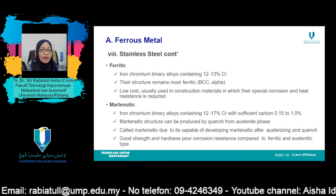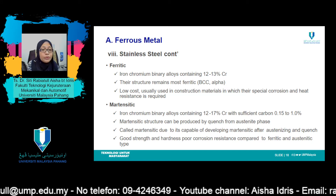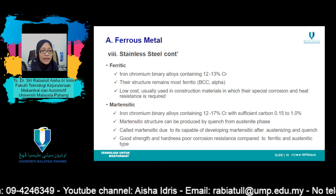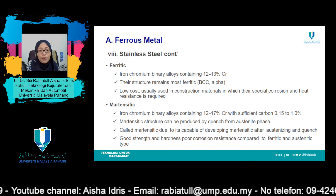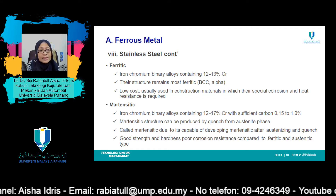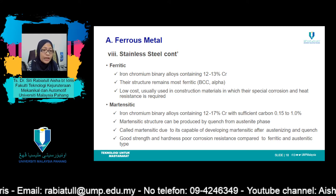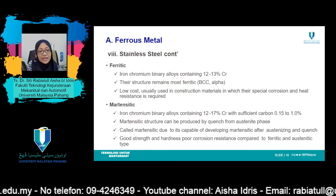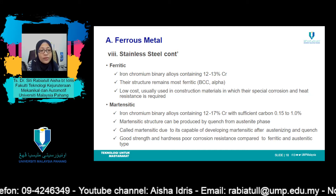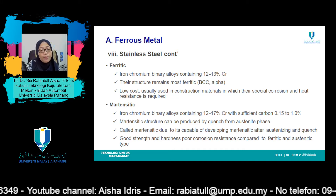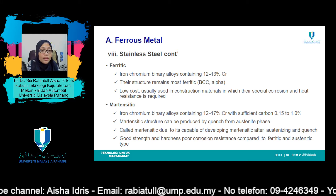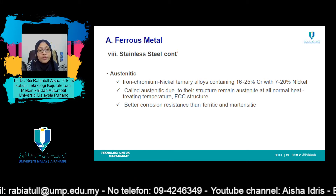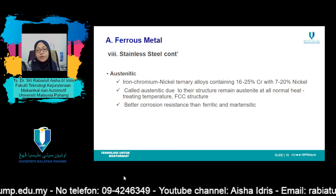Martensitic stainless steels are capable of being heat treated so that martensite is the prime microconstituent. Austenitic stainless steels have the austenite phase field extended to room temperature. Ferritic stainless steels are composed of the alpha ferrite phase. Austenitic and ferritic stainless steels are hardened by cold work because they are not heat treatable. Austenitic stainless steels are the most corrosion resistant due to high chromium and nickel contents. Both martensitic and ferritic stainless steels are magnetic; austenitic stainless steels are not. These steels resist oxidation and maintain mechanical integrity at elevated temperatures up to about 1000 degrees C, and are used in gas turbines, steam boilers, heat-treating furnaces, aircraft, missiles, and nuclear power units.